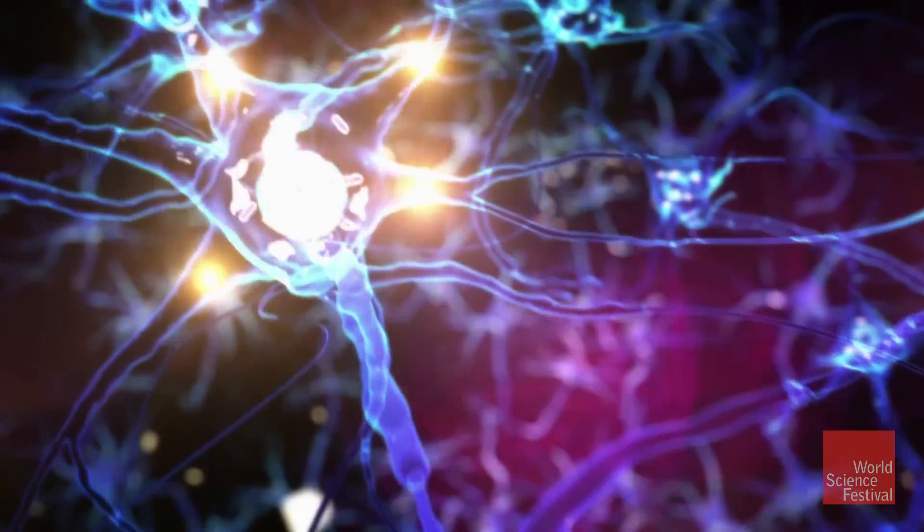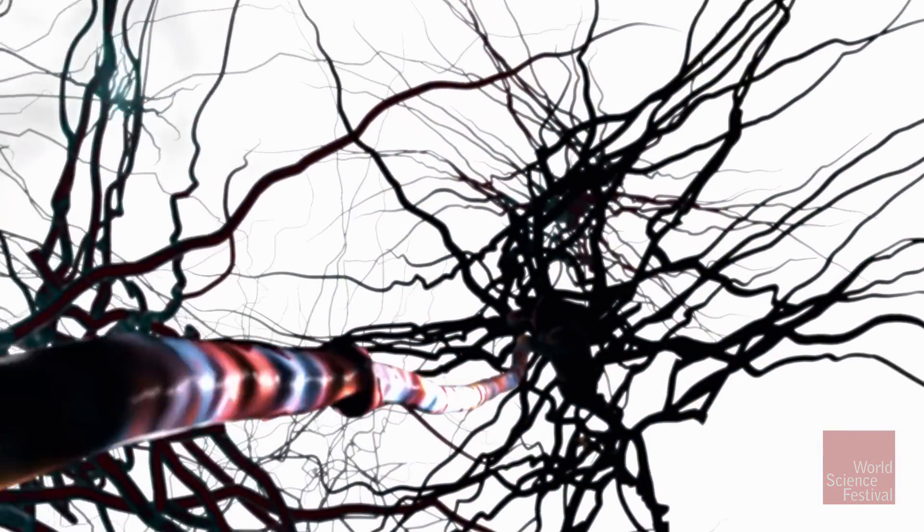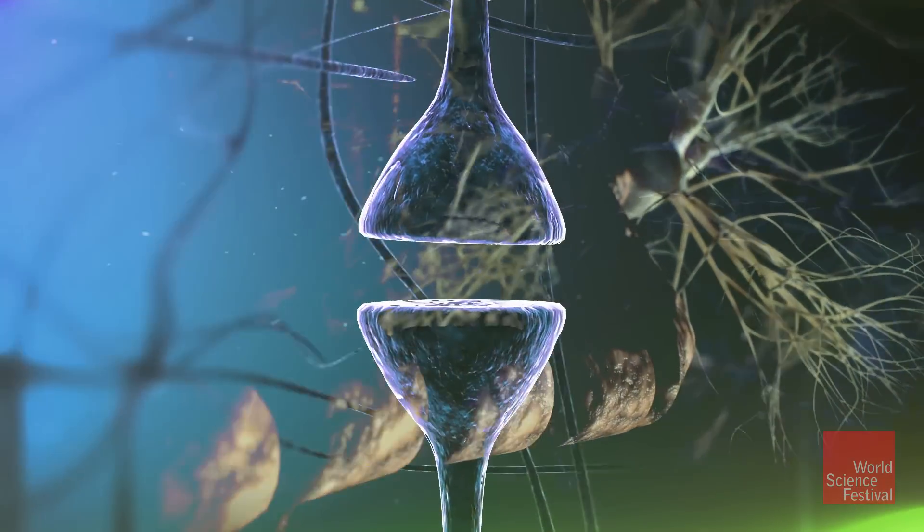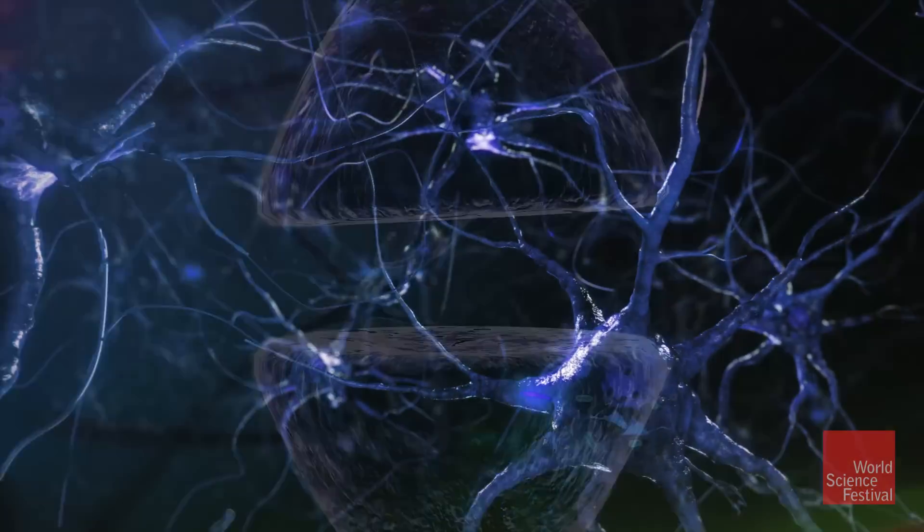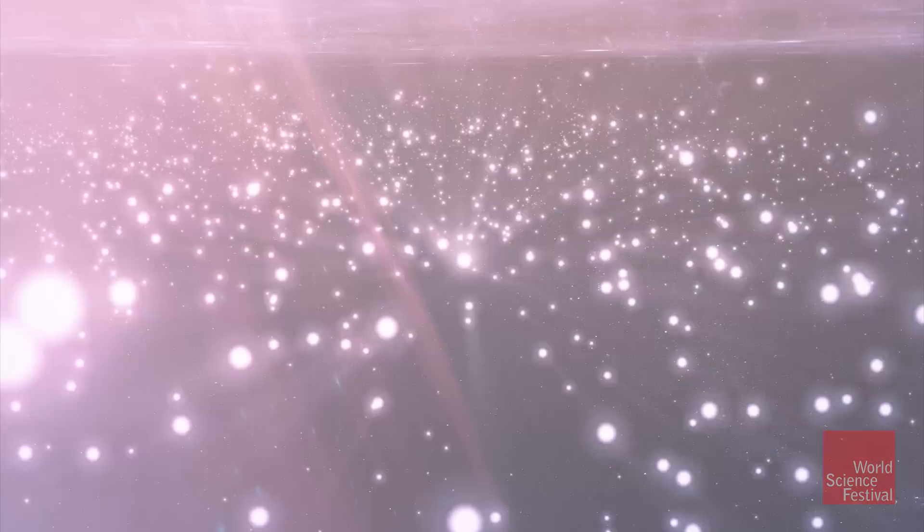80 billion neurons wire the brain, and each cell is connected chemically and electrically with 10,000 others. At give or take 100 trillion synapses, the brain is the world's most complex network, loaded with more dynamic interconnections than there are stars and planets in the Milky Way.